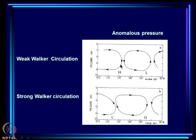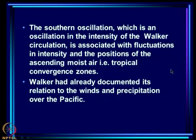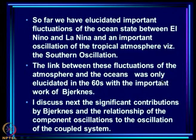In the weak Walker Circulation case the rising limb has shifted to the central Pacific. The Southern Oscillation — an oscillation in the intensity of Walker Circulation — is associated with fluctuations in intensity and position of the ascending moist tropical convergence zone, and Walker had already documented its relation to winds and precipitation over the Pacific. So far we have elucidated important fluctuations of ocean state between El Niño and La Niña, and an important atmospheric oscillation, namely the Southern Oscillation.